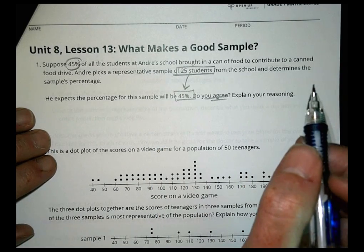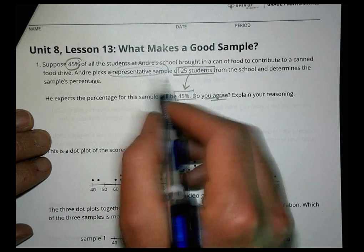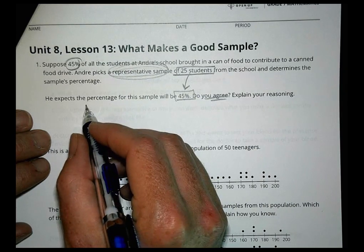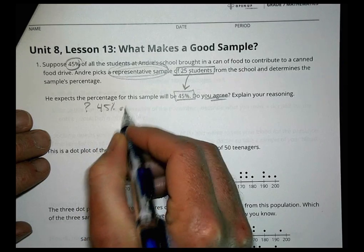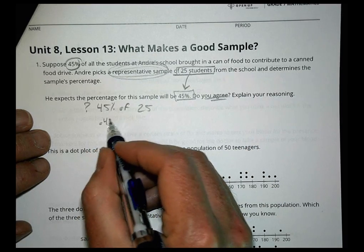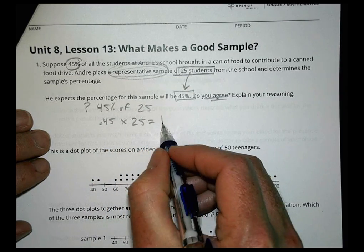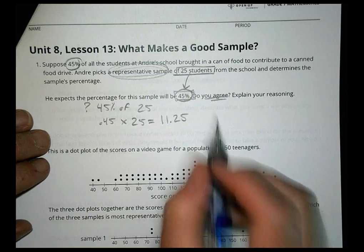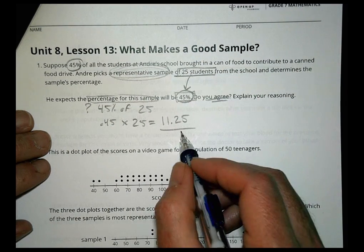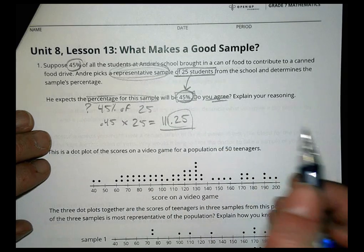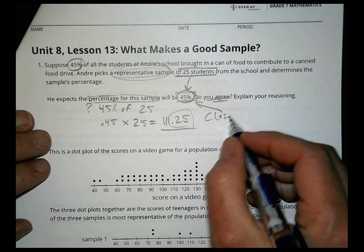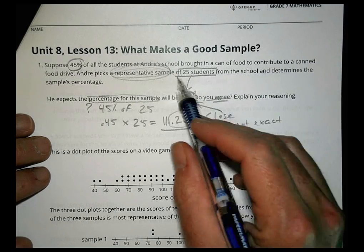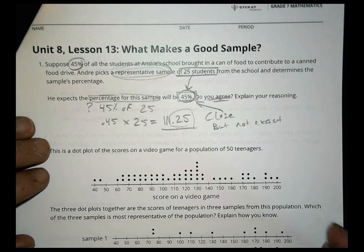If the sample is representative it should reflect the population, but can he actually get exactly 45%? Let's check: 0.45 times 25 equals 11.25. You can't have 0.25 of a person, so he cannot get exactly 45%. He could get close, but not exact — it's a limitation of the sample size he chose.